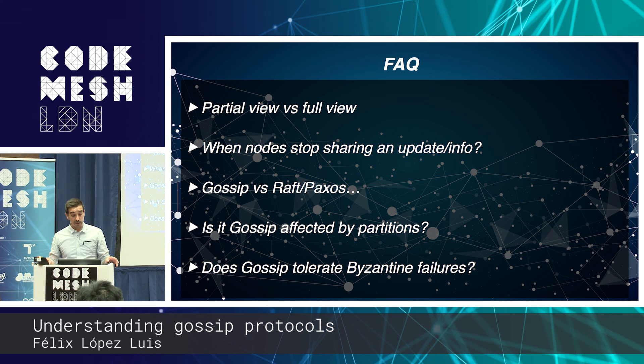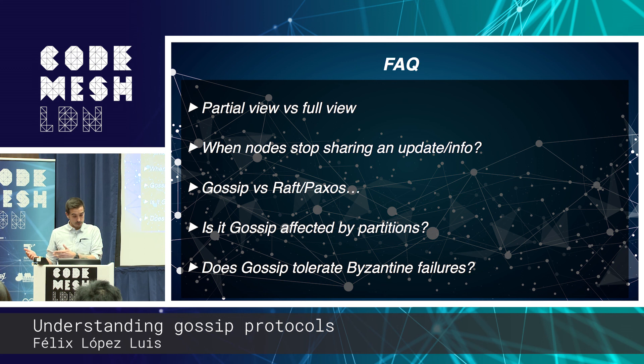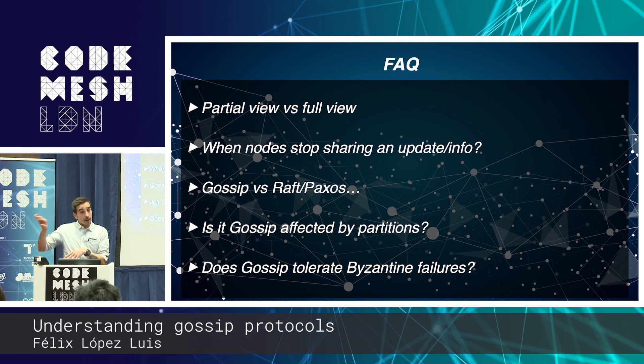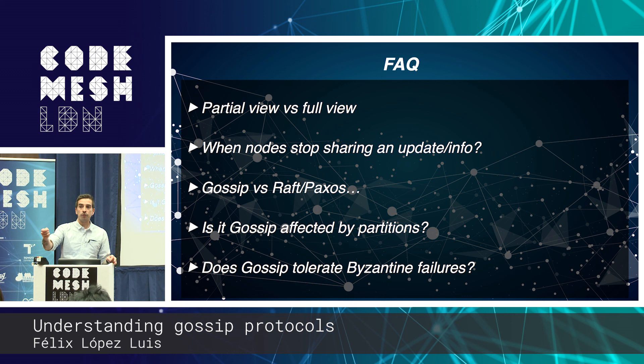Gossip versus Raft and Paxos: they're not alternatives — they solve different things. Paxos and Raft are highly consistent algorithms requiring a quorum, where more than half the nodes must agree on a value. In CAP theorem terms, they are CP algorithms — they trade consistency over availability. Gossip is the opposite: AP — availability over consistency. It can happen that you query a node in Gossip and the data is stale.